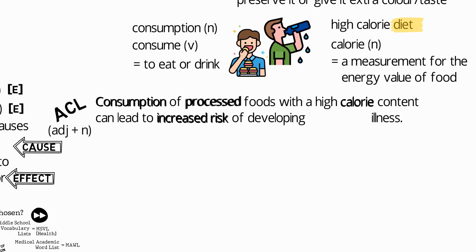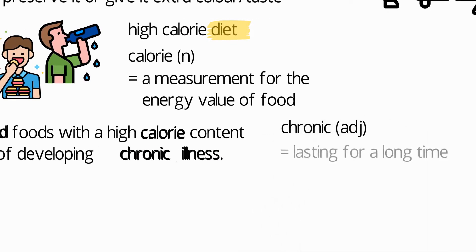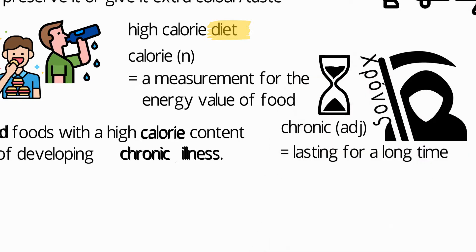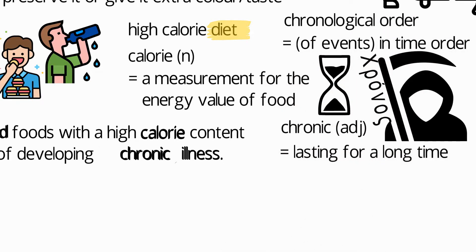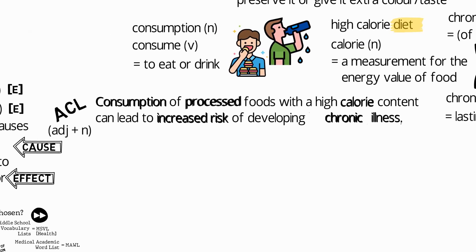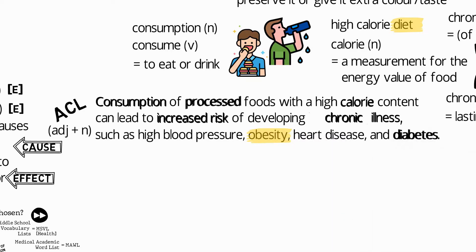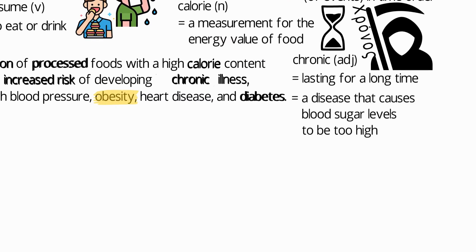The phrase 'long-lasting illness' in that sentence can be enriched by using 'chronic illness.' Chronic means lasting for a long time and comes from the Greek word 'chronos,' meaning time — you may also know 'chronological order,' which relates to events being in time order. Examples of chronic illnesses include high blood pressure, obesity, heart disease, and diabetes. Diabetes is a very useful and common word when writing or reading about health — it's a disease causing blood sugar levels to be too high, especially common among people who are overweight or obese.